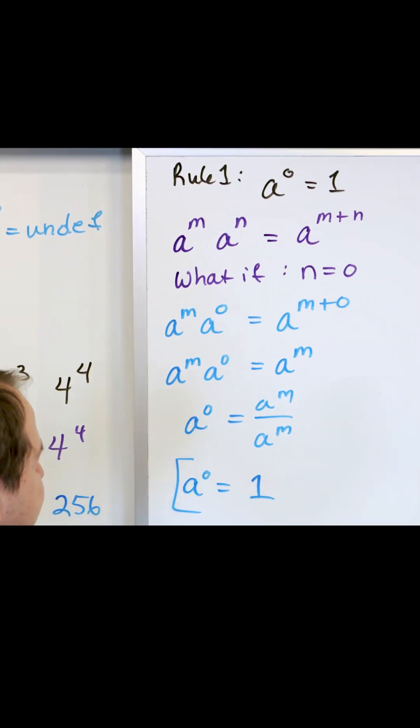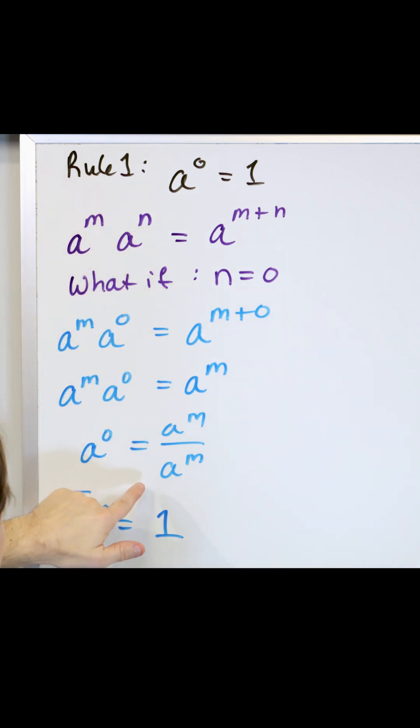Now, from the proof, we can see why. Because if we allow a to actually be zero, so it's zero to the zero power, then that would mean you would have zero to the m, zero to the m.